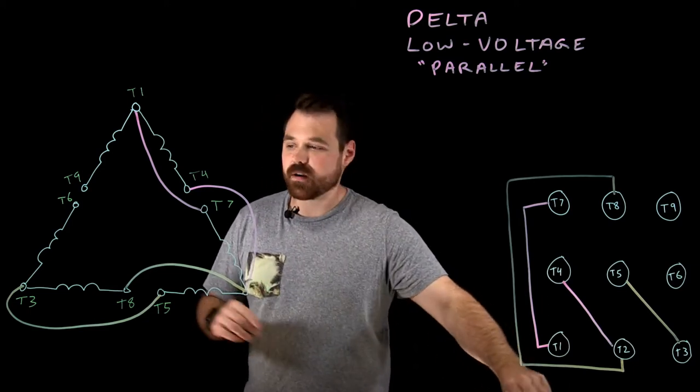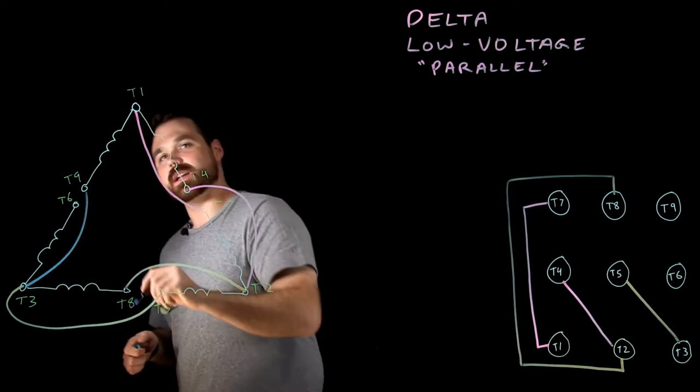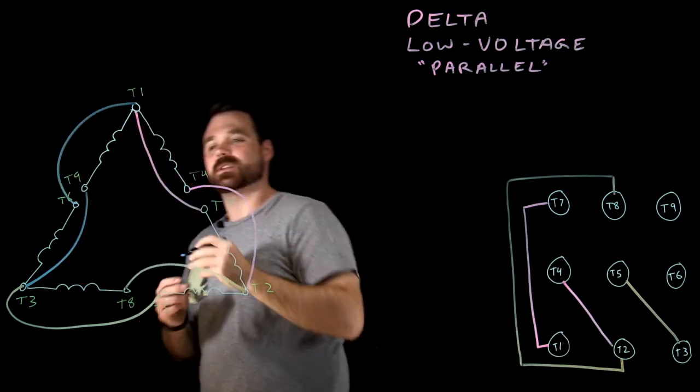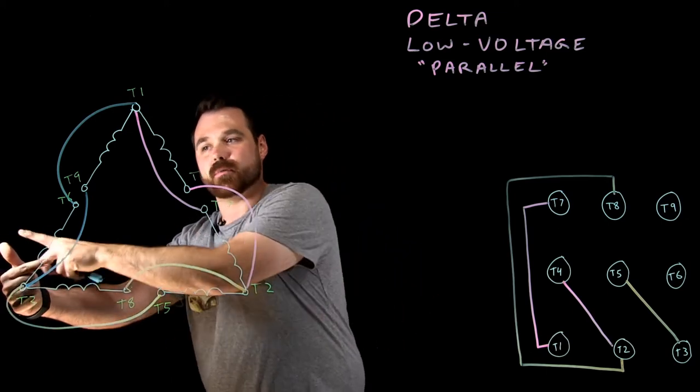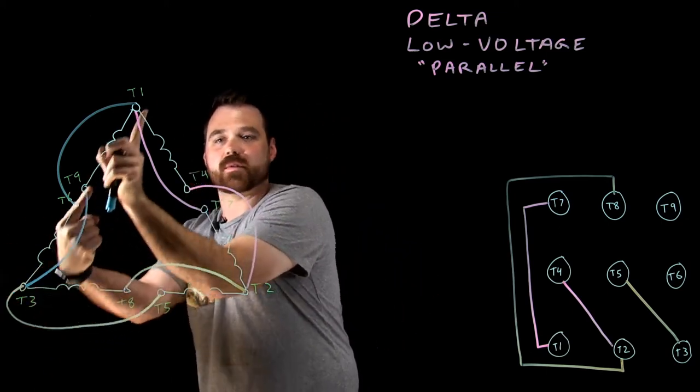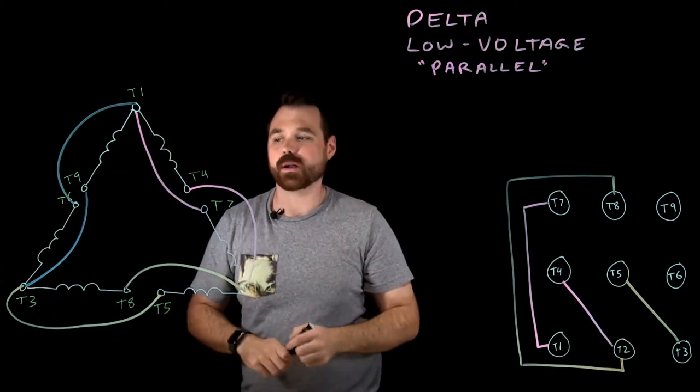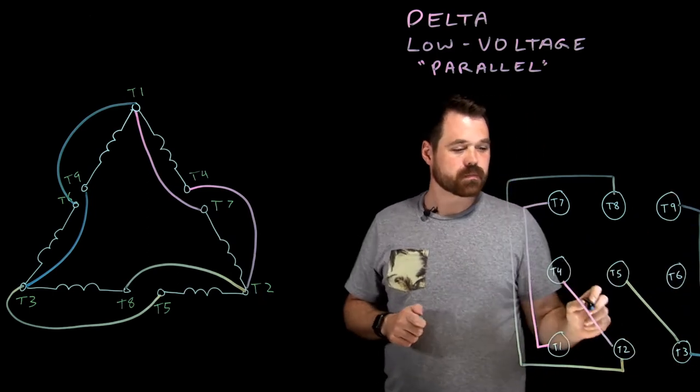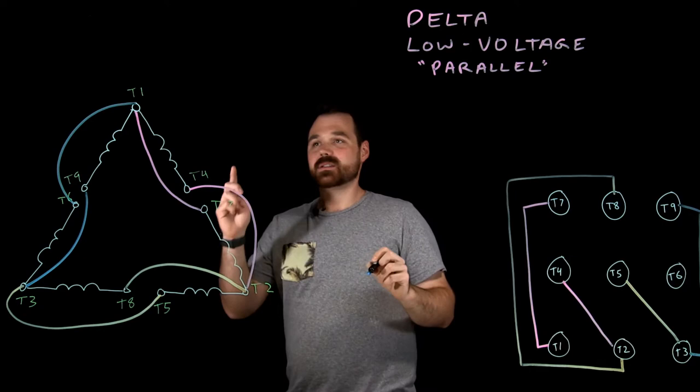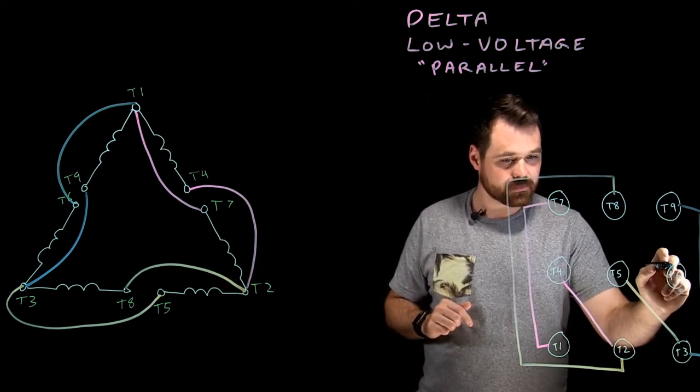We get into our very last connection here, which would be T3 to T9 and T6 up to T1. Again, current flows into T3, then it would also be flowing into T9, current flowing the same direction through both of those windings, which is what we want. So we have T3 to T9 and T6 to T1.